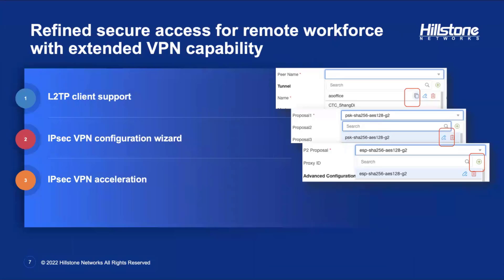The next key feature is the extra attention we've placed on extending our VPN capability to augment secure access for the remote workforce. With hybrid work becoming the status quo, there are still plenty of enterprises looking to secure the remote workforce, since that style of work is now here to stay. We've enabled our VPN services to be even more comprehensive, covering even minute use case scenarios, such as leveraging the layer two tunneling protocol with network address translation to enable remote access. L2TP is still quite popular due to it being easily manageable and configurable. We've been listening and we hear your requests, even the particular and detailed ones, which is why we have close to 300 new features in this iteration of StoneOS.